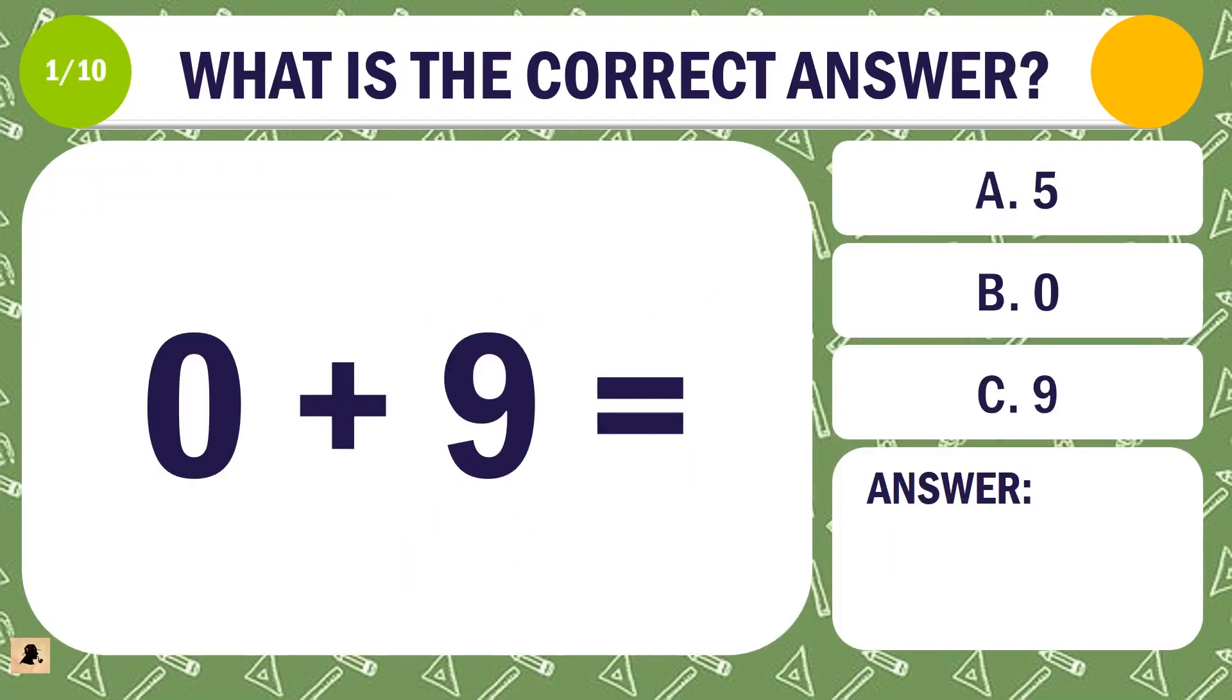Question 1. What is the correct answer for 0 plus 9? A. 5. B. 0. Or C. 9.